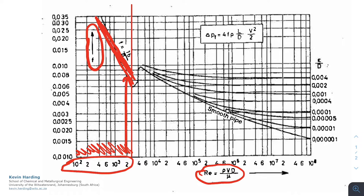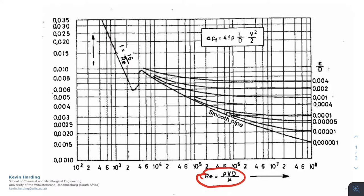If you notice on this graph, it defines F as equal to 16 divided by Reynolds. The friction factor on this graph is 16 divided by Reynolds number if you're in the laminar region. So you actually don't need this graph at all if you can prove that you're in the laminar region.